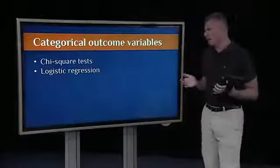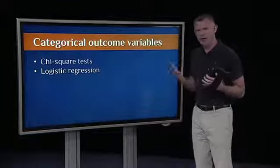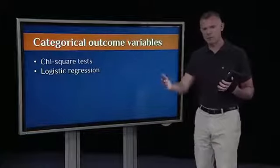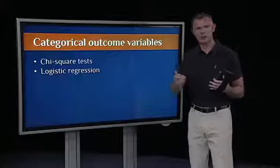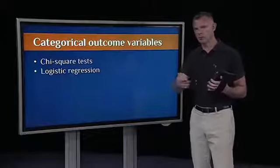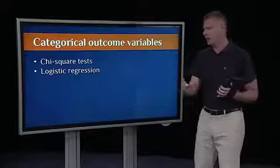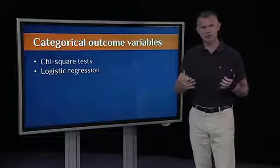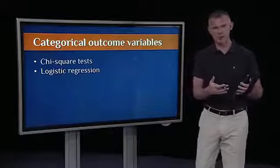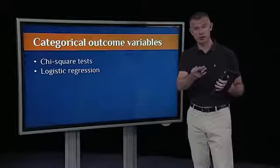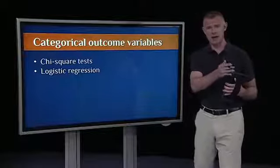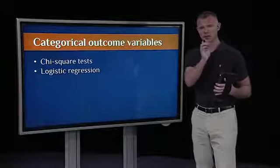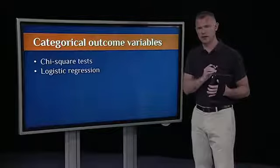We first dealt with categorical outcome variables. Throughout most of the course, when we were doing correlation, regression, multiple regression, t-tests and ANOVA, in all of those procedures, we were assuming a continuous, normally distributed outcome variable - like a ratio or interval variable as our outcome variable Y in regression, or the dependent variable in t-tests and ANOVA.